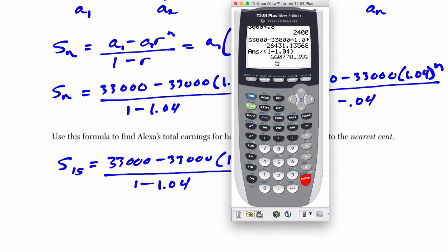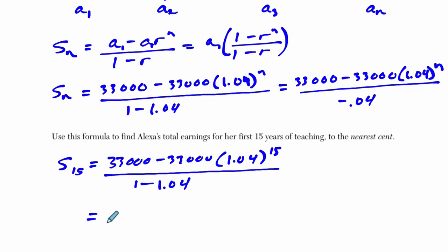And we can see 660,778, to the nearest cent is .39. So we'll write that down. That means our answer would be $660,778.39. So even though I'm sure she could be paid more, that does add up quickly, you see.